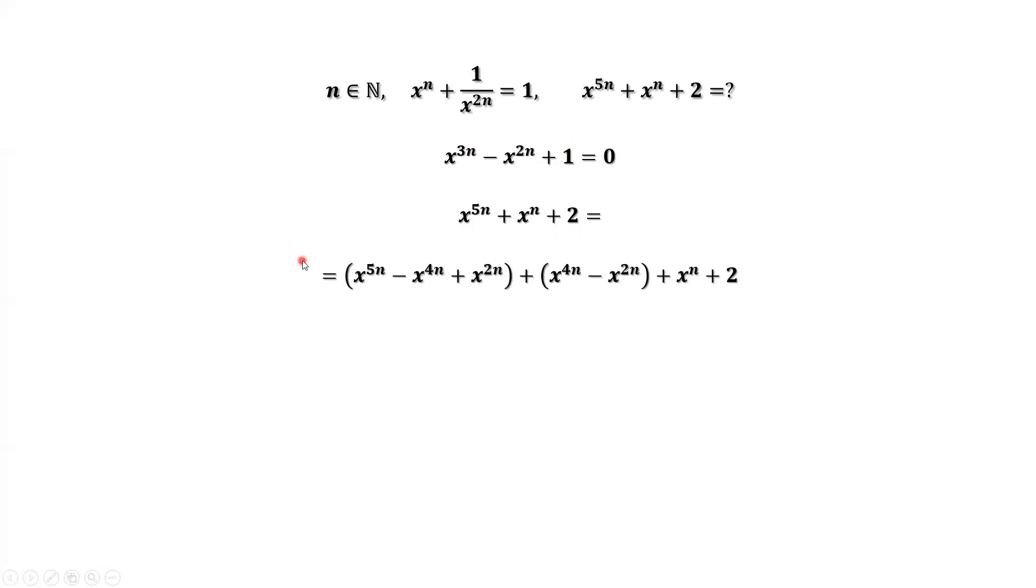We do this: x^(5n), that's given. This part, if the power plus 2n should be 4n, minus x^(4n). Originally, in this part, we don't have minus x^(4n), so we have plus x^(4n) here to keep the equal sign correct.